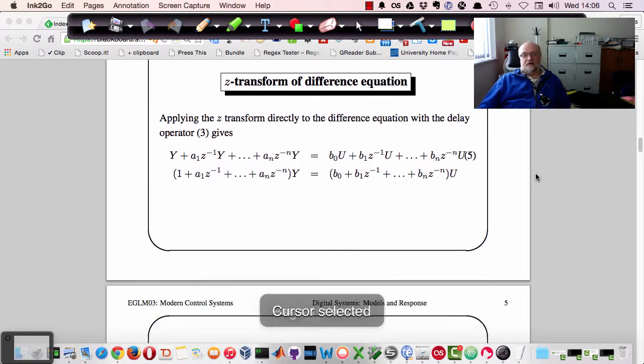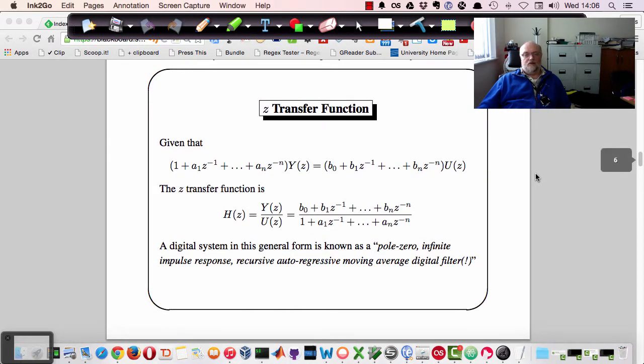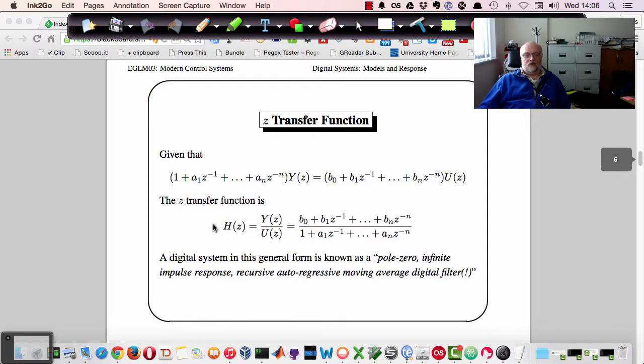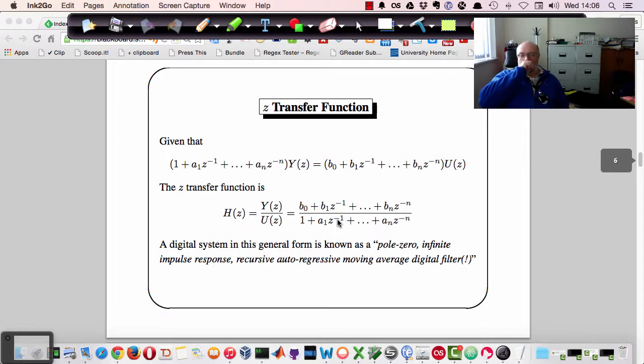So let's see that. So we've got this equation, the transfer function, defined as h is y over u, which is then this. And these are two, as you can see, two polynomials in the numerator and a denominator polynomial, in the descending powers of z to the minus n. And this is probably the most general form.